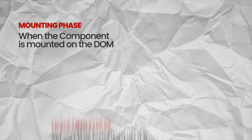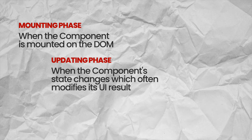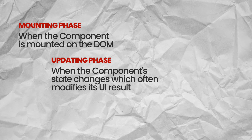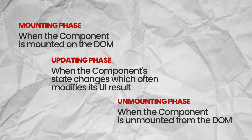You have the mounting phase, which is when the component is born — when the component is mounted on the DOM. You have the updating phase, which is when the component grows, and the idea here is that the component state changes. And then you also have the unmounting phase, which is when the component dies — when the component is unmounted from the DOM. And this is the component's lifecycle.